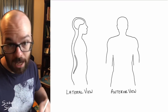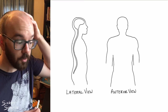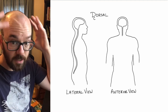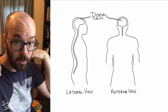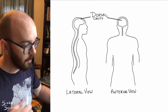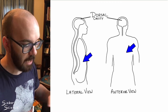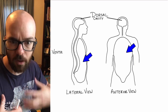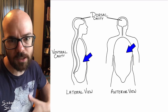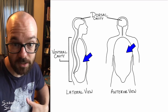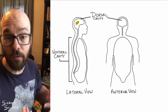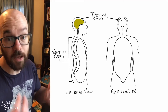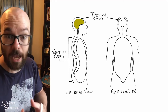Now there are two main cavities. The dorsal cavity, which we see drawn here, is going to contain the brain and the spinal cord. And then we have the ventral cavity, which is going to contain all those other body organs, like the heart, the lungs, the stomach, the intestines, and all of that. Both of those cavities are divided up into smaller sub-cavities.